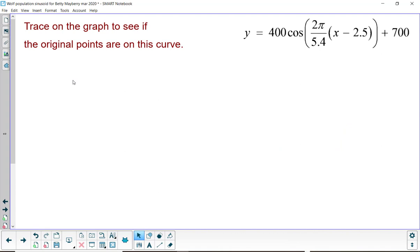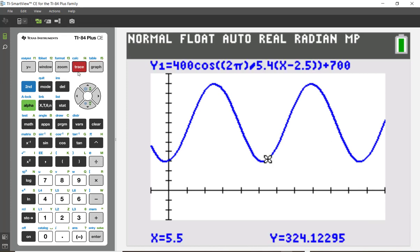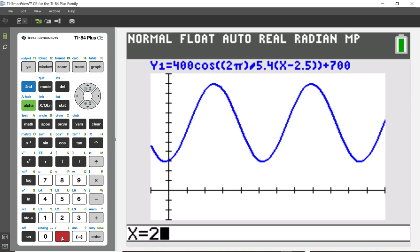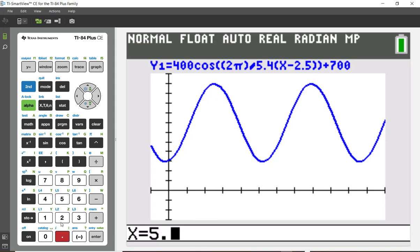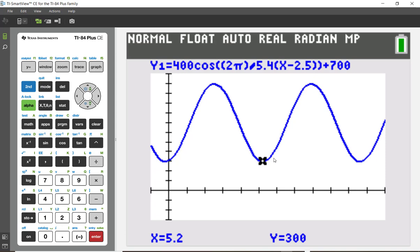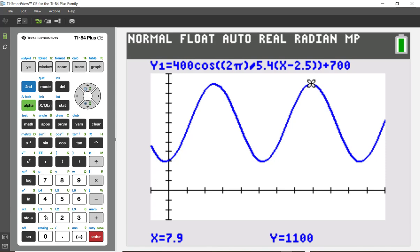We should make sure this equation is correct before we start answering a bunch of questions. So, let's trace on the graph to see if the original points are on this curve. Pressing trace, I'd like to trace to 2.5. And it says at two and a half years, there are 1100 wolves. So, that one checks. At 5.2, press enter and I'm getting the 300. Great. While we're at it, I might as well try the 7.9. And that should be a max, which is 1100. Bingo. And 10.6 years after we started recording. There should be a minimum, which is 300. Beautiful.